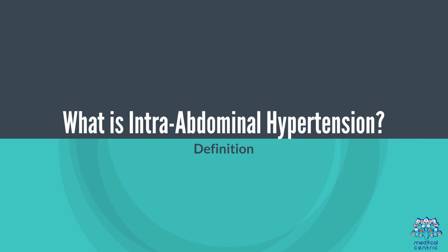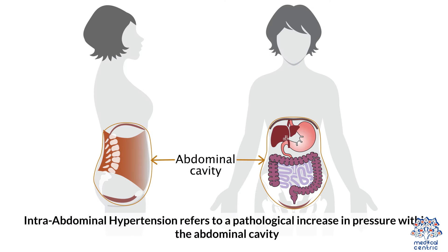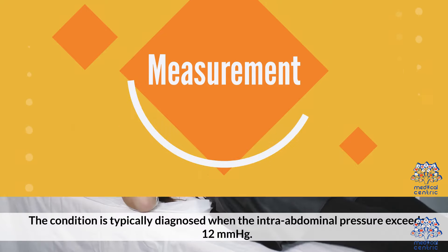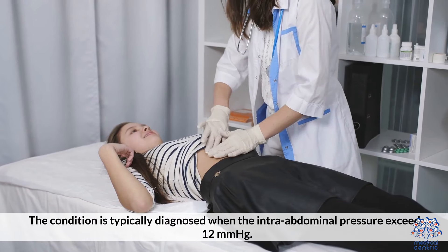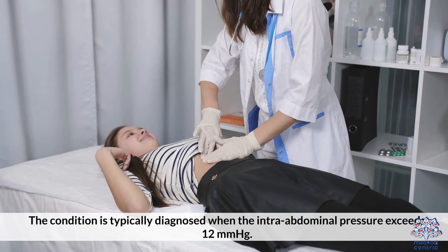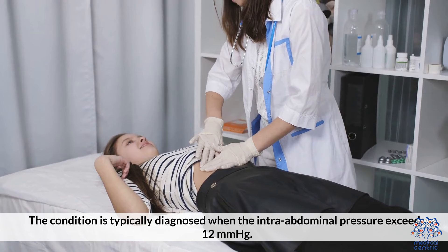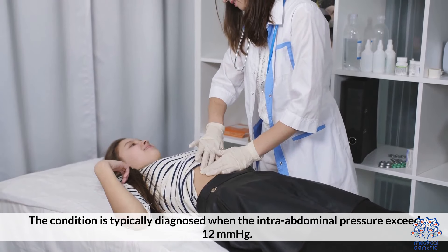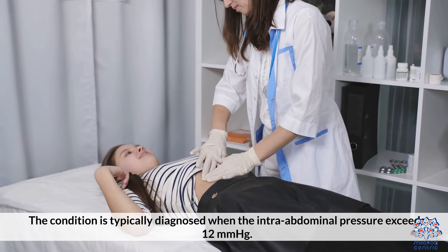What is Intra-Abdominal Hypertension? Intra-abdominal hypertension refers to a pathological increase in pressure within the abdominal cavity. The condition is typically diagnosed when the intra-abdominal pressure exceeds 12 mmHg.